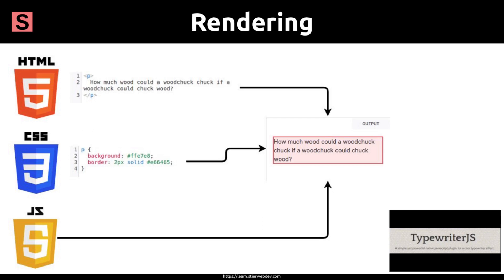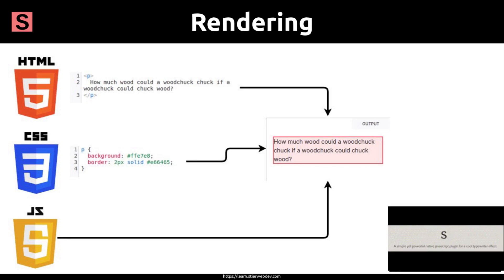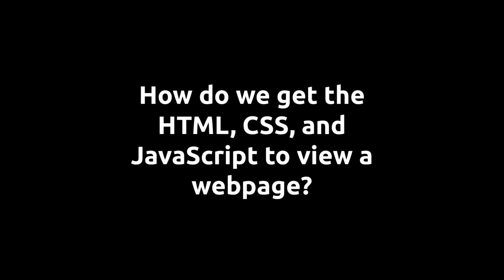JavaScript is typically used for more complex effects that regular HTML and CSS are unable to do. For example, in the bottom right corner of this slide, you can see that we have a typewriter animation on some words. It actually looks like someone's typing out those letters one by one. JavaScript is making that happen. So the browser is in charge of taking HTML, CSS, and JavaScript files that the web developers have written, and it turns it into the nice styled TikTok.com or Facebook.com web pages that we often browse.